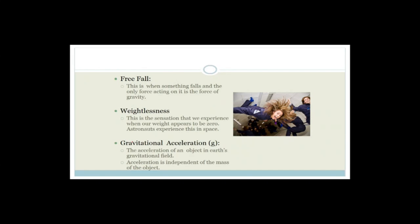Before we carry on with exam questions, we need to talk about some definitions. The first is freefall — defined as when something falls and the only force acting on it is the force of gravity. Theoretically, on Earth there is no such thing as freefall because there is also air friction. But in many physical science problems, when we say something is under freefall, we mean you can ignore air friction.